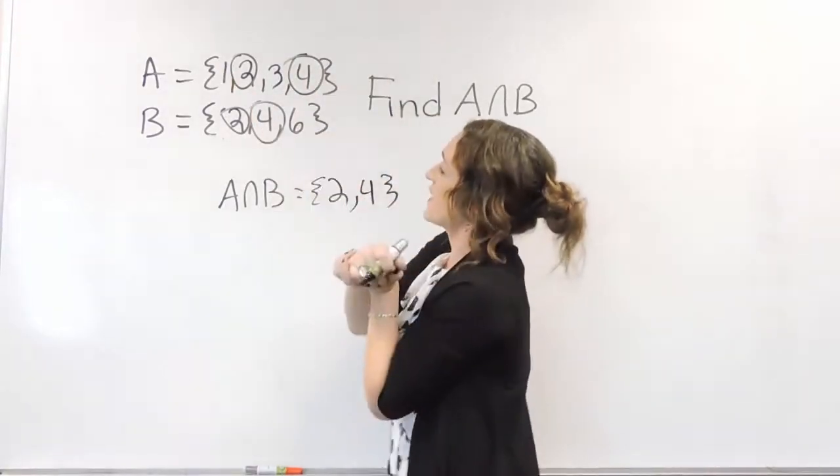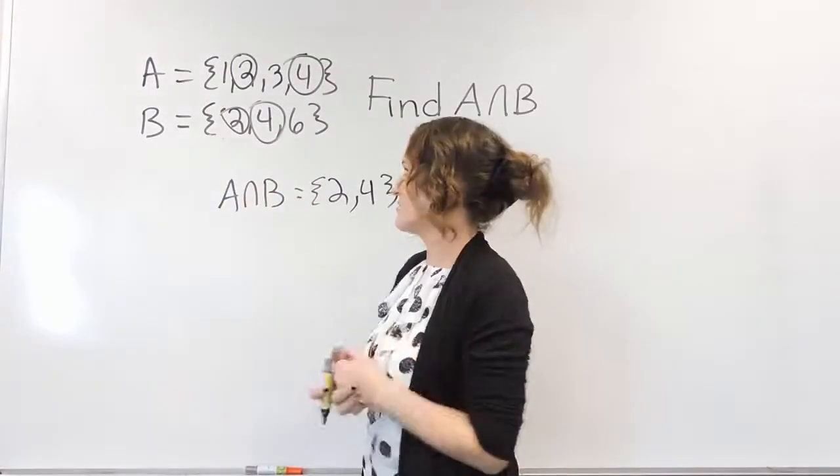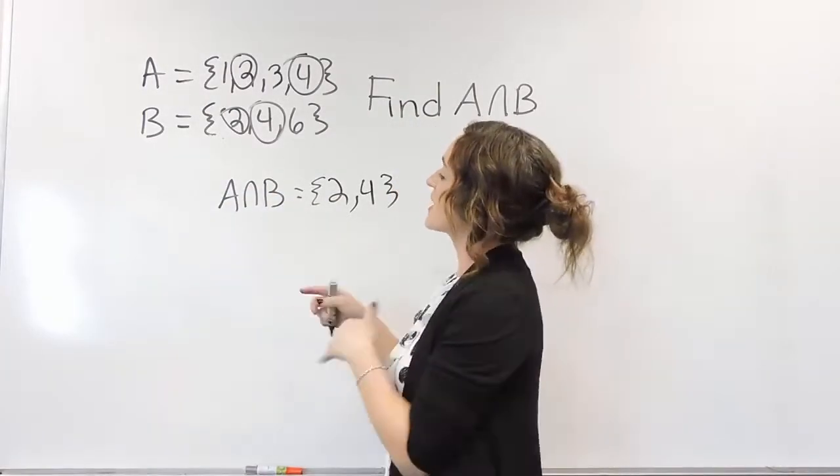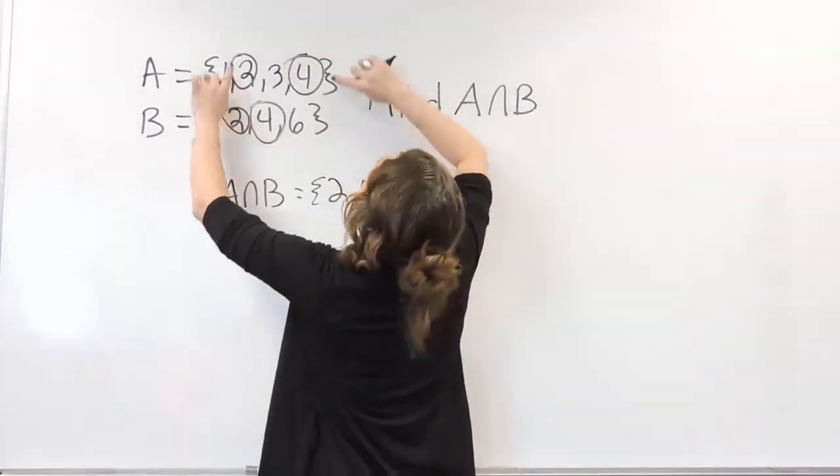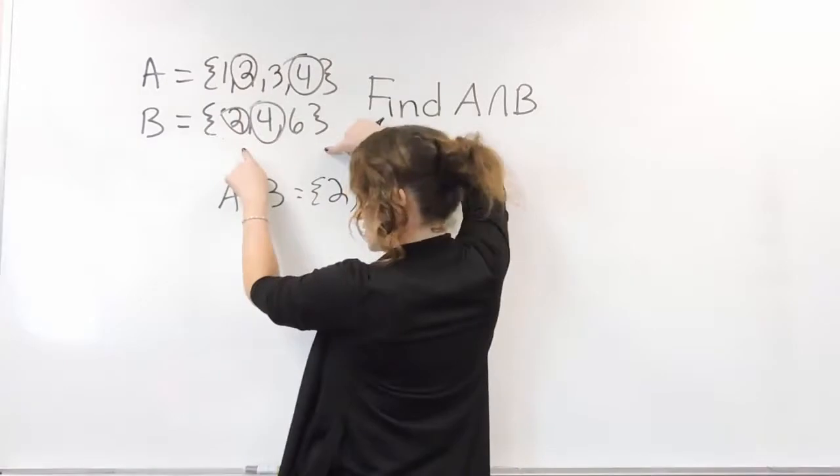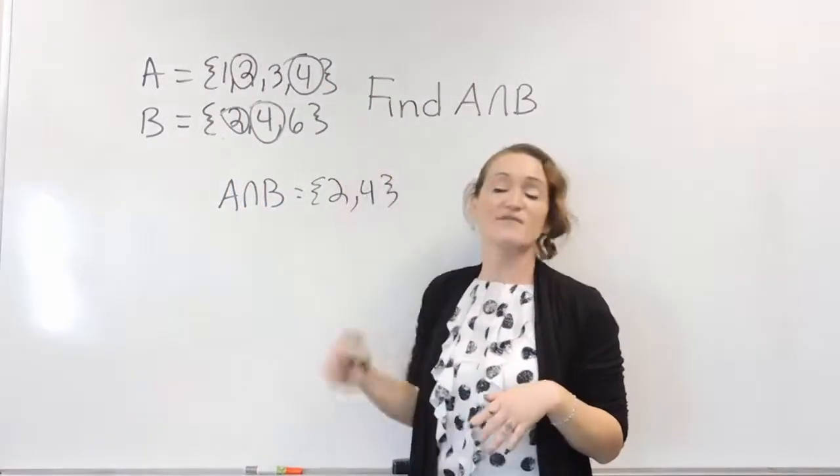And then I run out of things, right? Because if it's not in A, you can't share it in B either. So the intersection of A and B are the elements two and four, because those are the ones that are in A that are also in B. That's really all that intersection is—it's what they have in common.